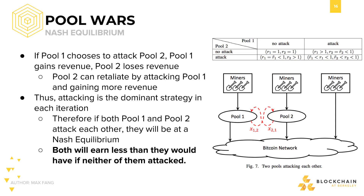Let's say Pool 1 chooses to attack Pool 2. Pool 1 increases its own personal profit, as demonstrated in the last section, but Pool 2 suffers. So what is to stop Pool 2 from retaliating to increase revenue? Well, nothing. Pool 2 has no reason not to attack Pool 1 back.